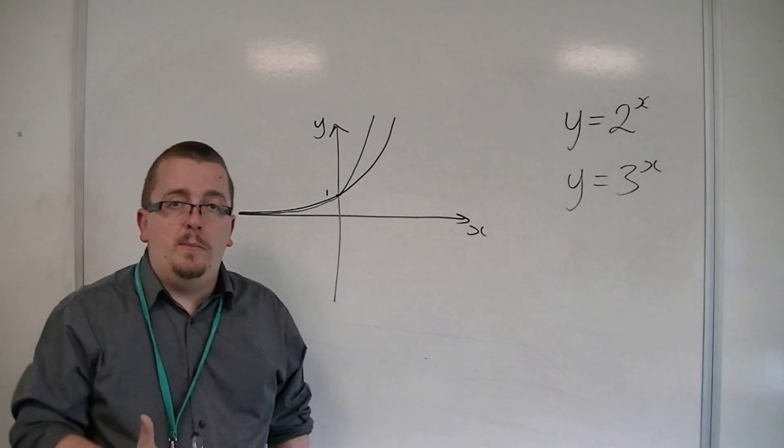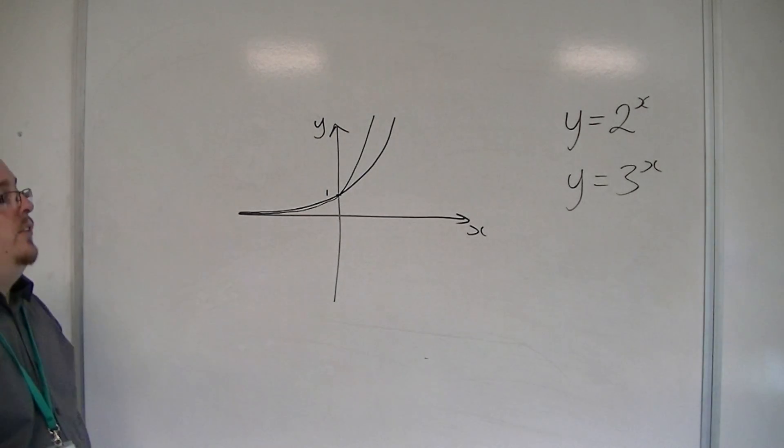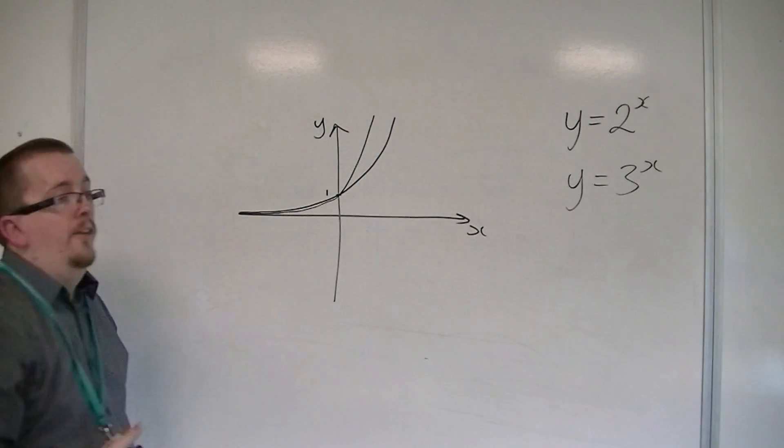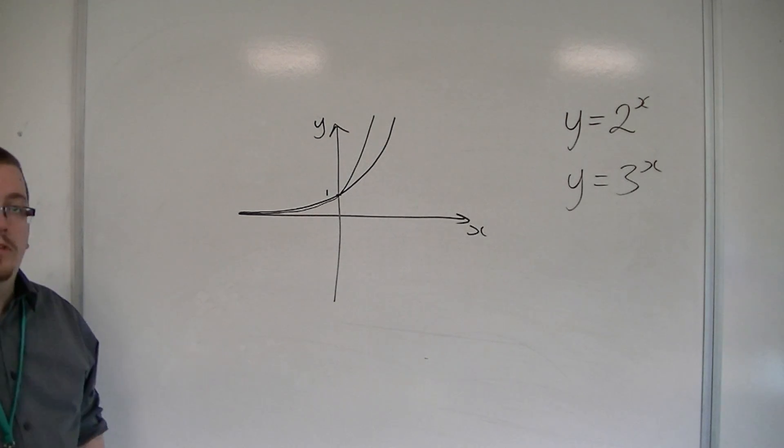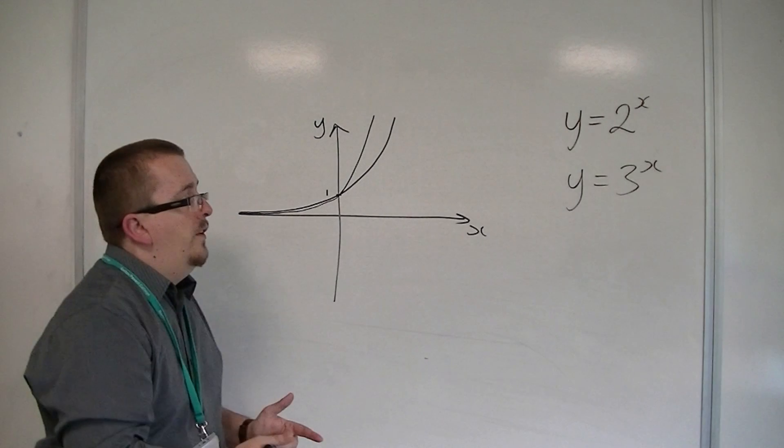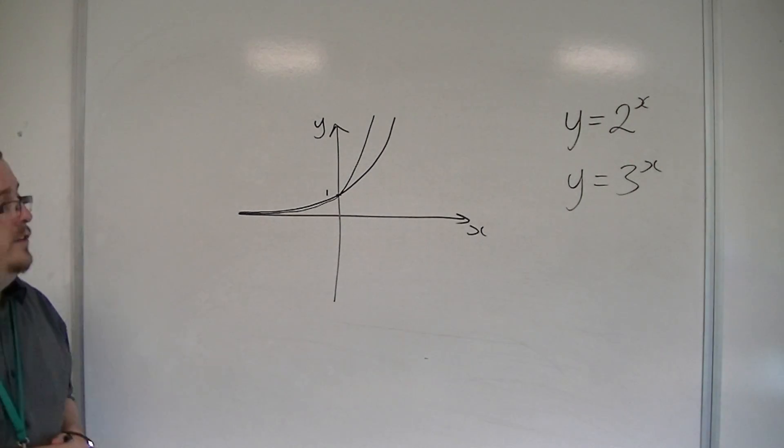So these curves look similar, but y equals 3 to the x increases faster than y equals 2 to the x. So this is what an exponential curve is like.